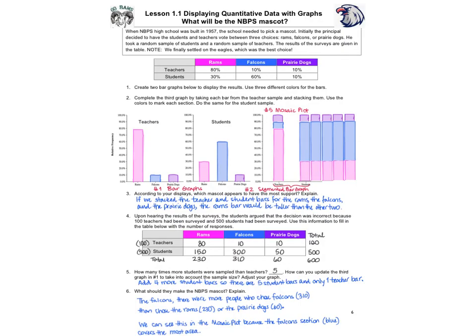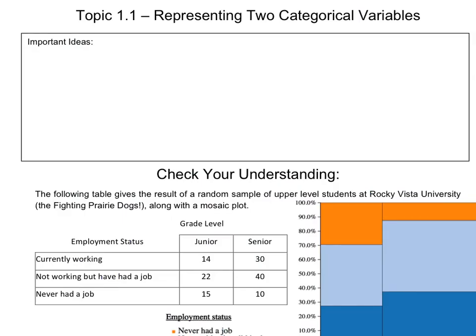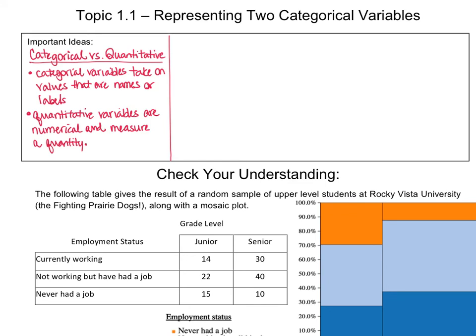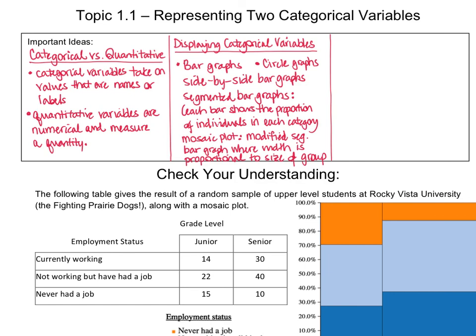Let's write down the important ideas from this mini-lesson. Categorical variables take on values that are names, labels, or categories, while quantitative variables are numerical and measure a quantity. Examples of categorical variables would be favorite elective class; examples of quantitative variables would be height or weight. When it comes to displaying categorical variables, we have two choices: bar graphs of the various types, or circle graphs. One of the most important reasons we look at two-way tables, segmented bar graphs, or mosaic plots is to learn about association — are the two variables related? Does knowing the distribution of one variable help us predict the values or distribution of the other?